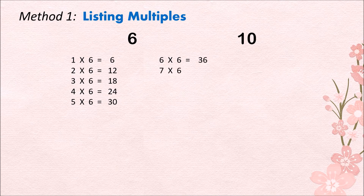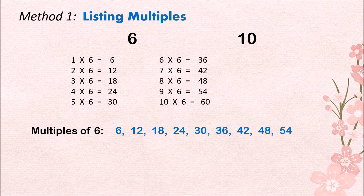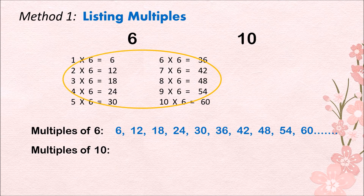7 times 6 is 42, 8 times 6 is 48, 9 times 6 is 54, and 10 times 6 is 60. The list of multiples for 6 are: 6, 12, 18, 24, 30, 36, 42, 48, 54, 60, and so on. Now let's do number 10. If you are familiar with its multiples, we can skip this process and proceed right away to the next step.